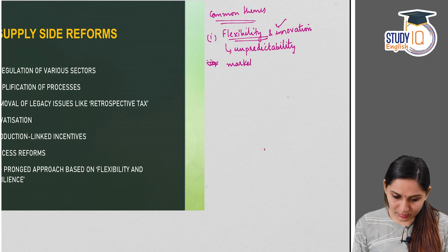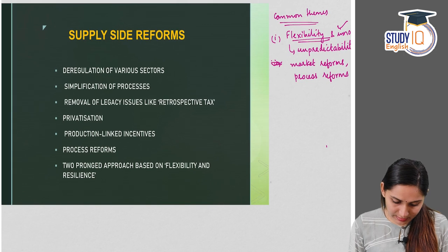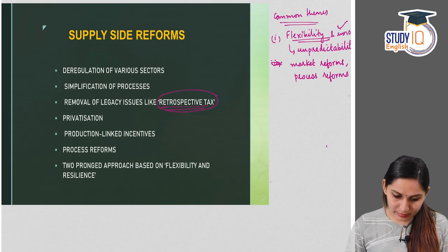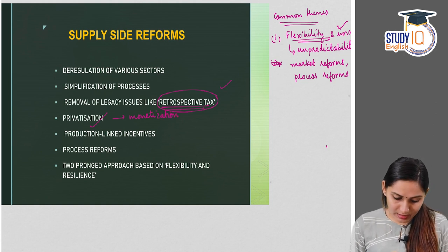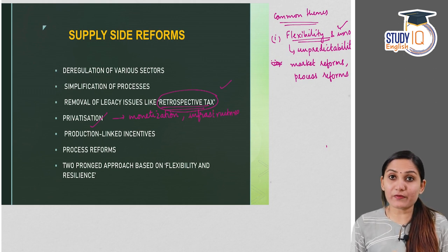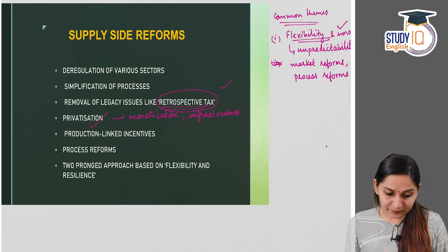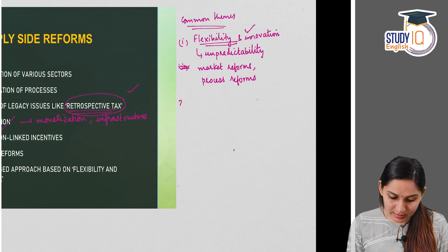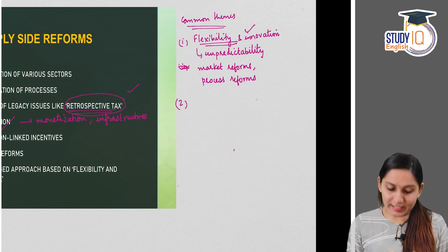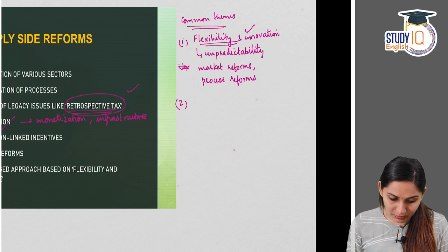The flexibility and innovation measures of the government include: market reforms, process reforms, removal of legacy issues such as retrospective tax, privatization, and along with privatization — monetization, that is increasing money supply. Also creation of physical infrastructure. We have seen how infrastructural creation is a supply side reform as well. That is the first theme of India's supply side strategy.